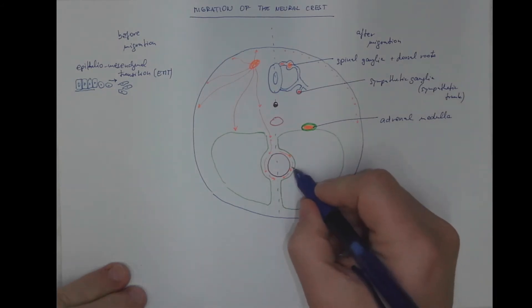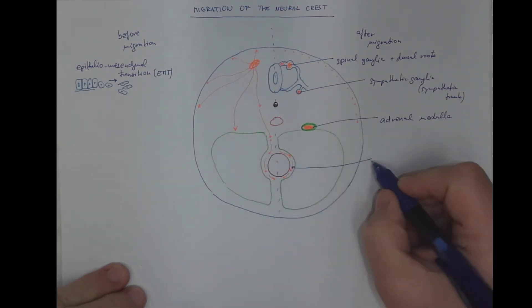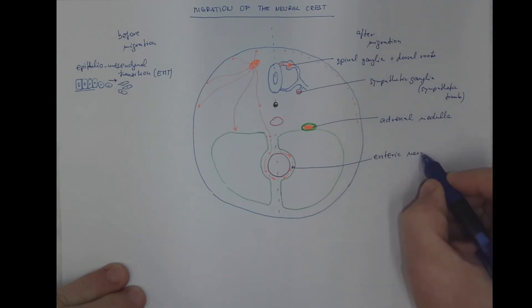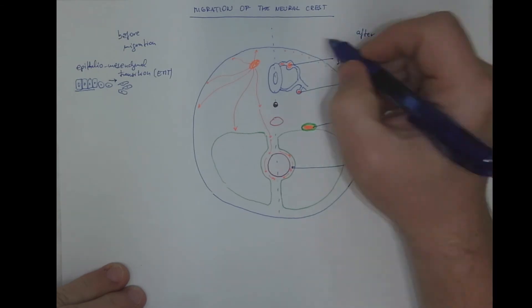And I will label the enteric nervous system, and I will label also the pigment cells, the melanocytes.